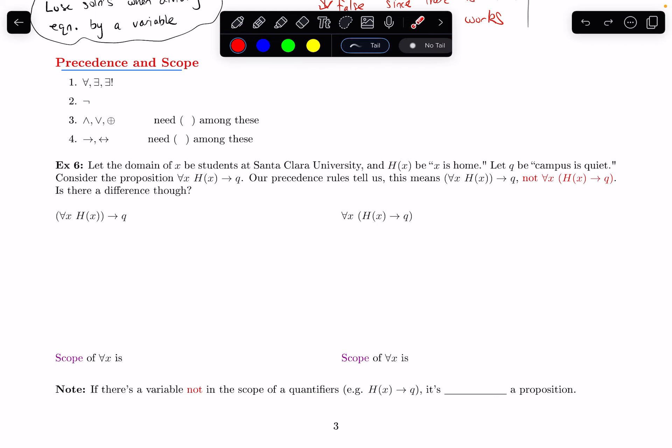Let's let the domain of X be students at Santa Clara University, abbreviated as SCU. So the domain is students at SCU. H(x) is the propositional function X is home. Let Q be campus is quiet. And I want to consider the proposition for all X, H(x) implies Q.